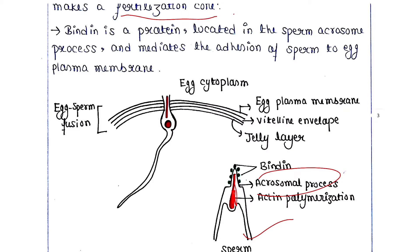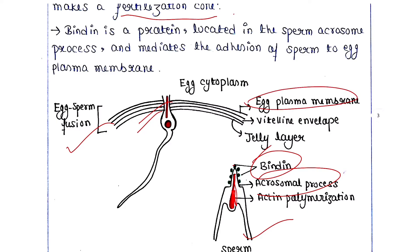Bindin is a protein located in the sperm acrosome process. These bindin proteins mediate the adhesion of the sperm to the egg plasma membrane. Bindin, located in the sperm acrosome process, will mediate fusion of the sperm with the egg plasma membrane.